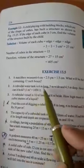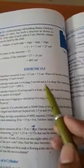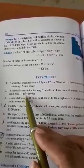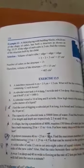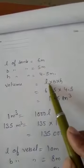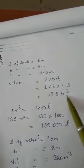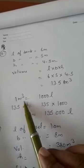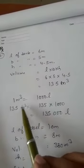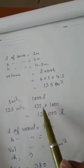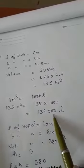Question number 2: a cuboidal water tank is 6 meters long, 5 meters wide, and 4.5 meters deep. We have to find how many liters of water it can hold, given that 1 cubic meter equals 1000 liters. Firstly, volume = length × breadth × height = 6 × 5 × 4.5 = 135 cubic meters. Since 1 cubic meter = 1000 liters, then 135 cubic meters = 135 × 1000 = 135,000 liters.